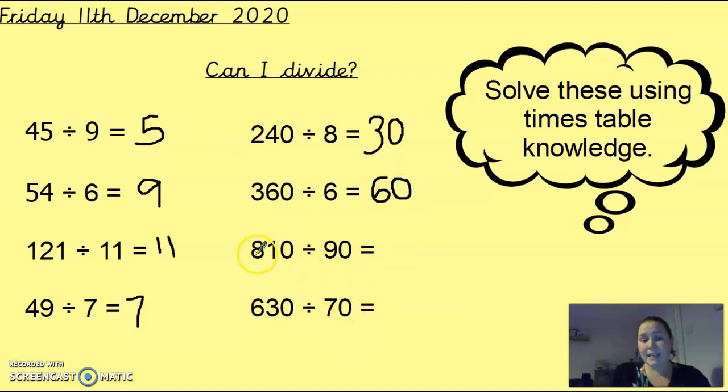These ones are slightly different. 810 divided by 90 is just going to be 9, because this is 10 times bigger and this is 10 times bigger, so the answer is the same as 81 divided by 9. Same with this one. 630 divided by 70, I've made that 10 times bigger than 63, that 10 times bigger than 7, so the answer will be 9. Well done if you got all of those right.